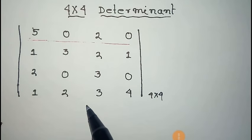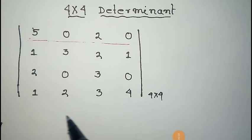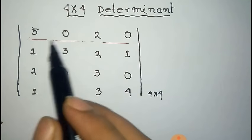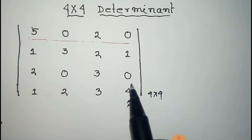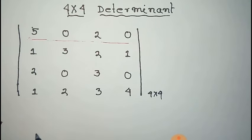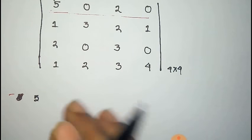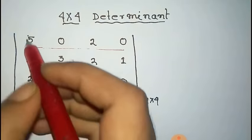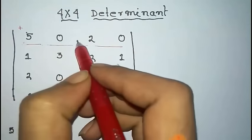We have to find the value of this 4x4 determinant. For this, we have to expand with any one row or any one column. We use the first row here, and the first element is 5, so write 5 there. Now for the sign convention, the pattern is plus minus plus minus, minus plus minus plus, and so on.